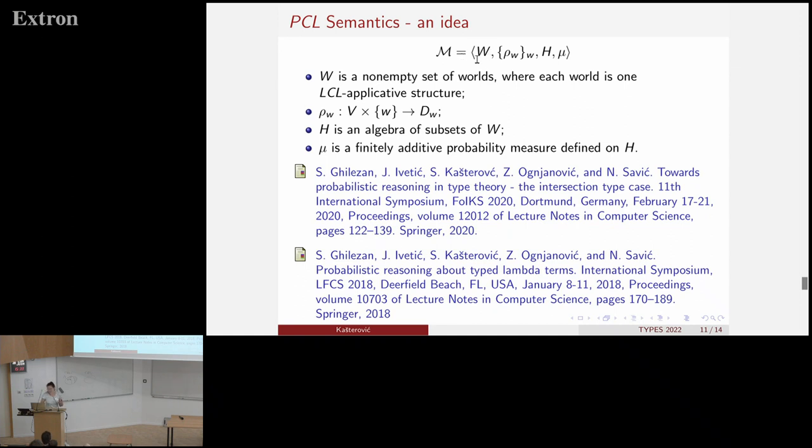After, so besides this W, we will have a family of valuations, which means that for each world we will have a valuation rho W. So a world with this valuation will actually give an LCL model. And in addition, we have H, an algebra of subsets, and finally additive probability measure, which will be actually employed in the interpretation of this probability operator.